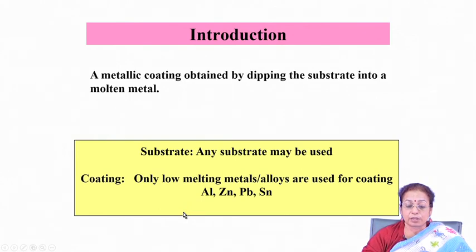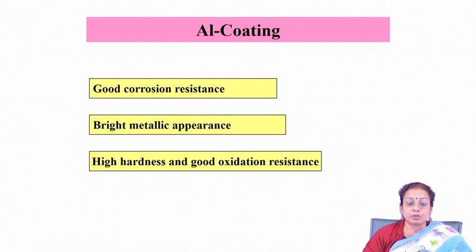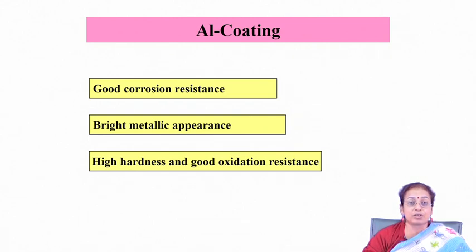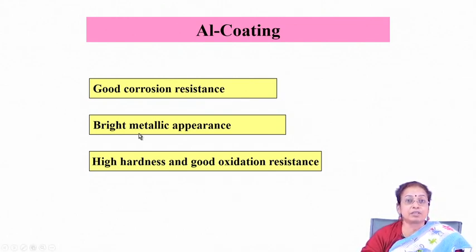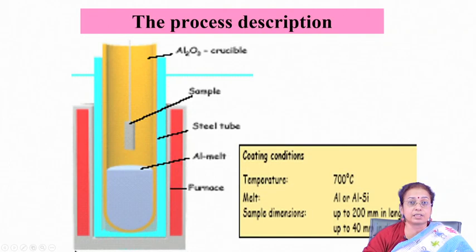The first hot dipping technique is aluminizing, or hot dipping of aluminum. The basic purpose of aluminum coating is to improve corrosion resistance and high temperature oxidation resistance; it also provides a bright metallic appearance. On iron and steel, it develops a very thin aluminide layer which is having high hardness. These aluminides can also be applied for low stress abrasion wear applications and also have very good corrosion resistance properties.